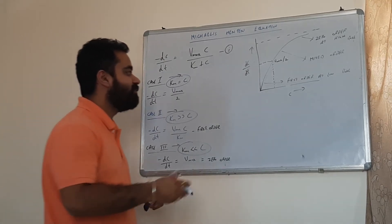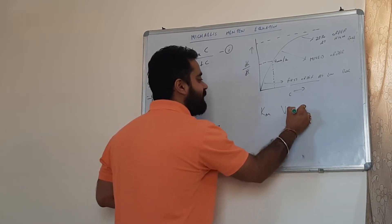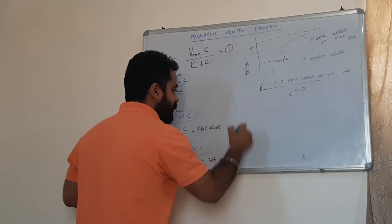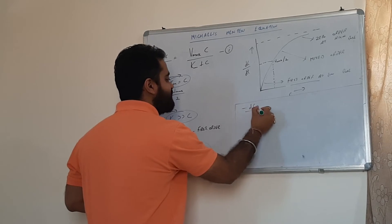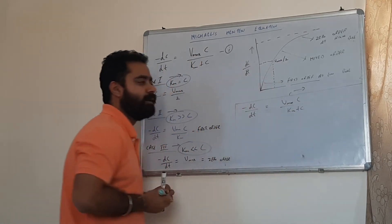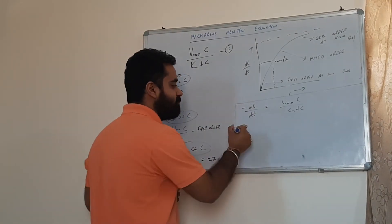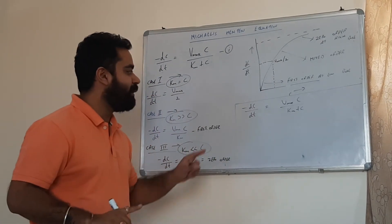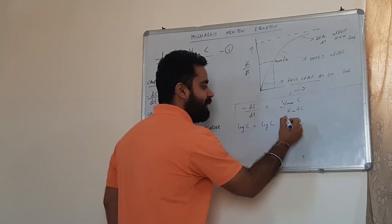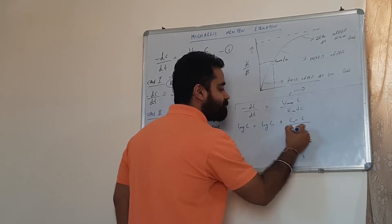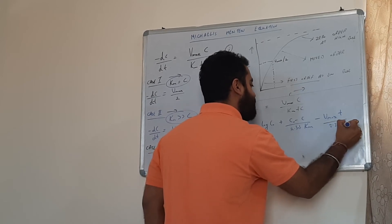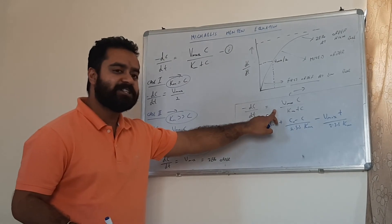Now let us consider how to estimate the values of Km and Vmax. Starting from the general equation — minus dC/dt equals Vmax·c divided by (Km + c) — on integration of this equation and converting to log form, we get: log c equals log c₀ plus (c₀ minus c) divided by (2.303·Km) minus Vmax·t divided by (2.303·Km). This is the final equation after integration and conversion to log form.